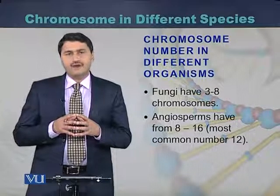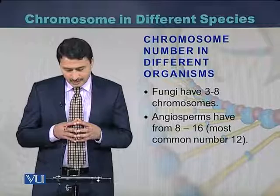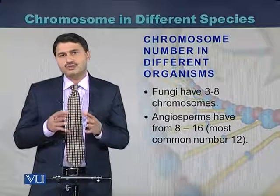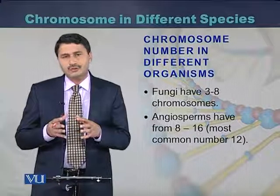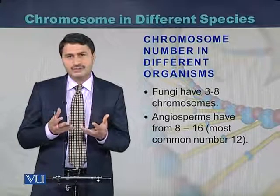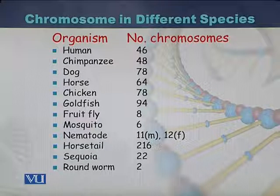In the case of fungi they have 3 to 8 chromosomes, while in the case of angiosperms they have 8 to 16 chromosomes, but in most angiosperms the chromosome number is around 12.